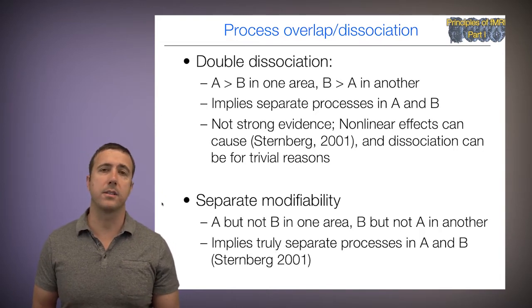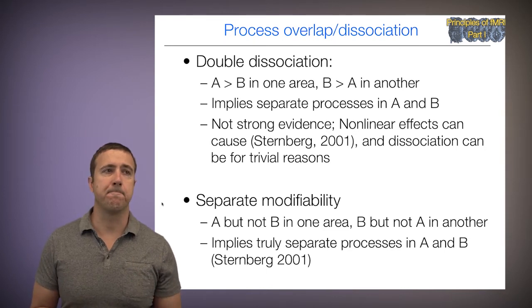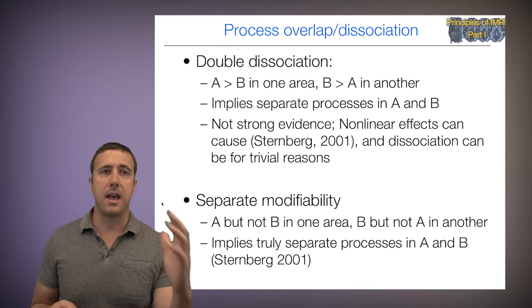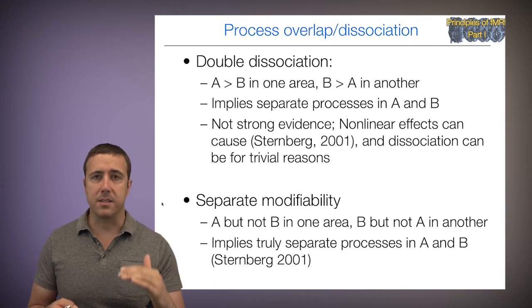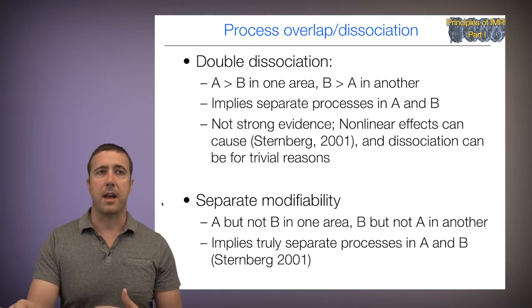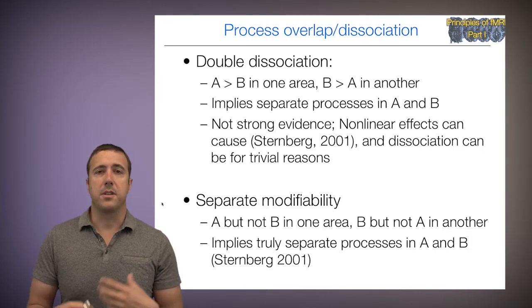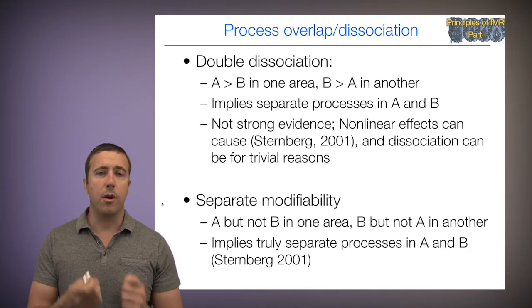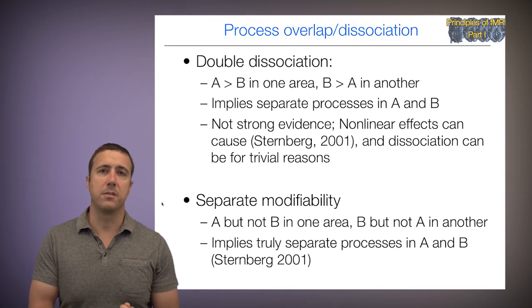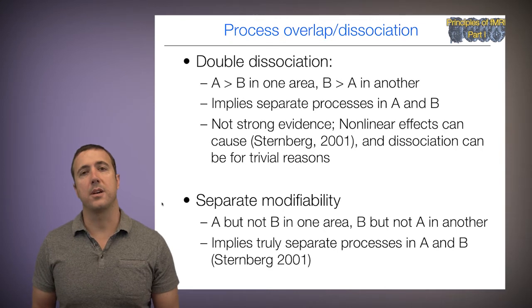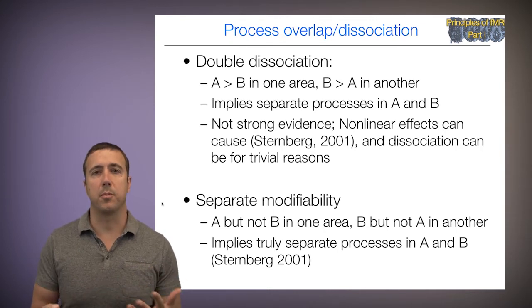A stronger argument is called separate modifiability. Let's say task A activates one area but B does not, and B activates another area but not A. We have the double dissociation, but with the added constraint that there's really no response to the thing that doesn't activate the area — that activates it less. This implies separable processes in A and B.